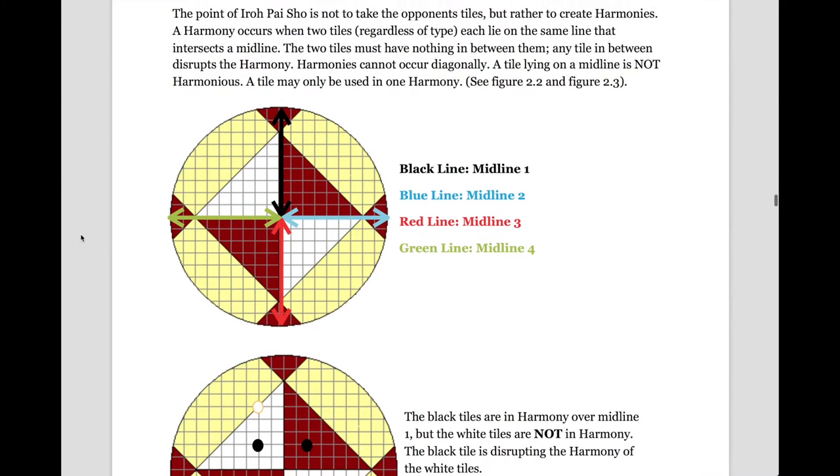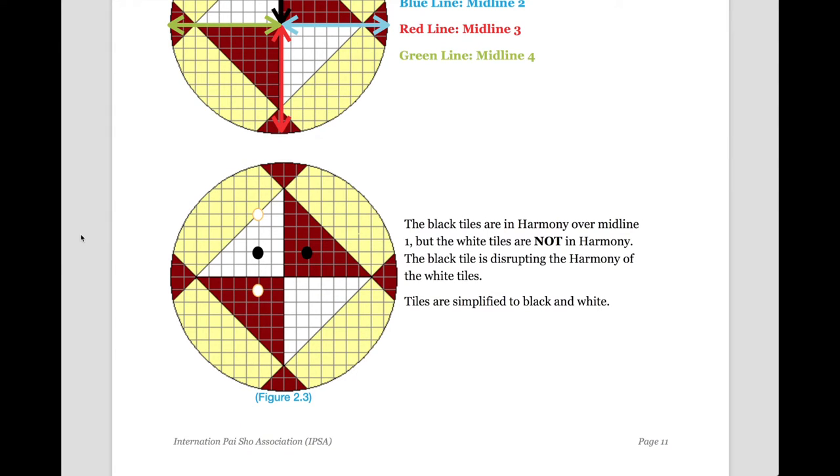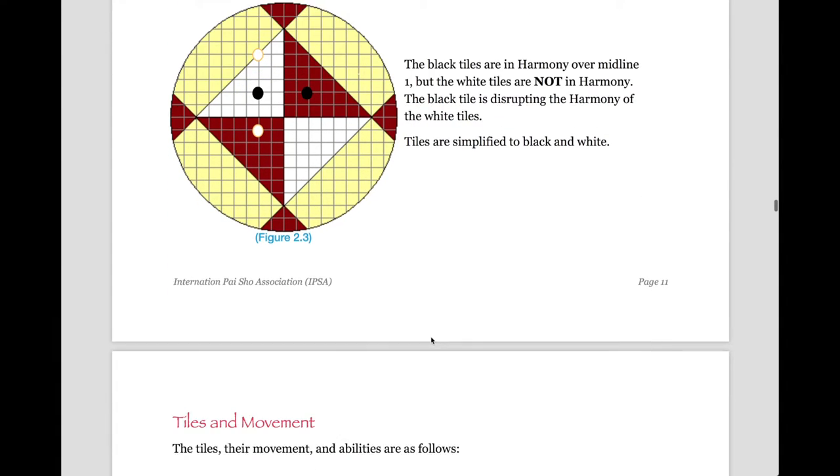So, for example, in the next image here, you will see that the two black pieces lie on the same line and they create a harmony over midline 1. Now, the white pieces would be creating a harmony over midline 4, but due to the fact that one of the black pieces is in between them, it's actually disrupting that harmony. As a note, the images here are simplified to black and white just for demonstration purposes.